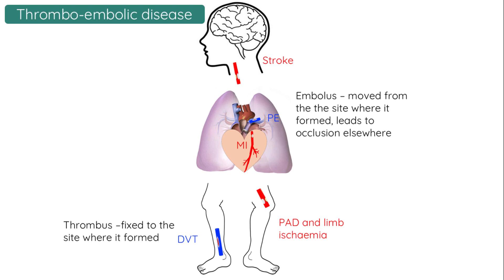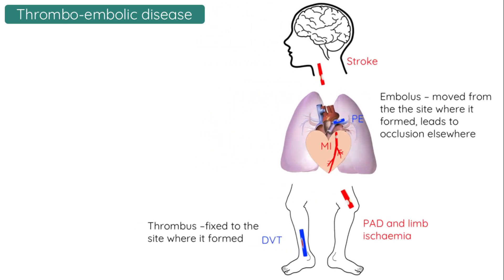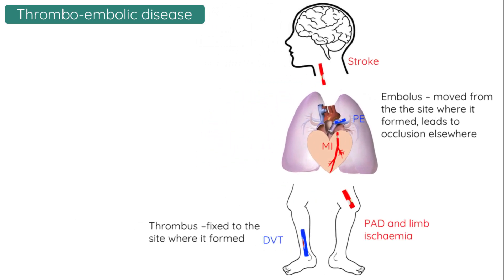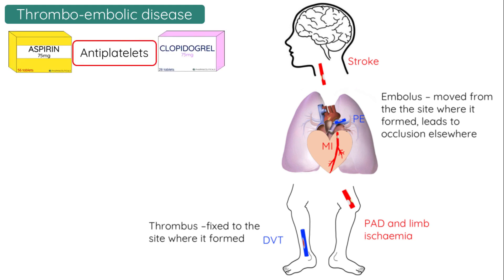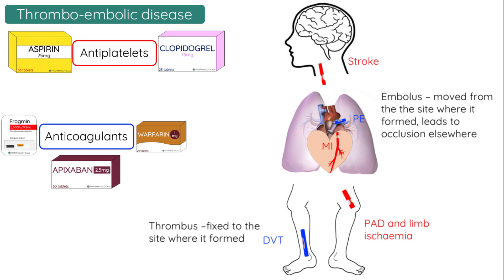We typically use two groups of drugs to prevent and treat thromboembolic diseases, and these groups are antiplatelet drugs and anticoagulant drugs. Antiplatelets include drugs such as aspirin and clopidogrel, whereas anticoagulants include three main subgroups: warfarin, heparins, and non-vitamin K oral antagonists such as apixaban, rivaroxaban, and dabigatran.